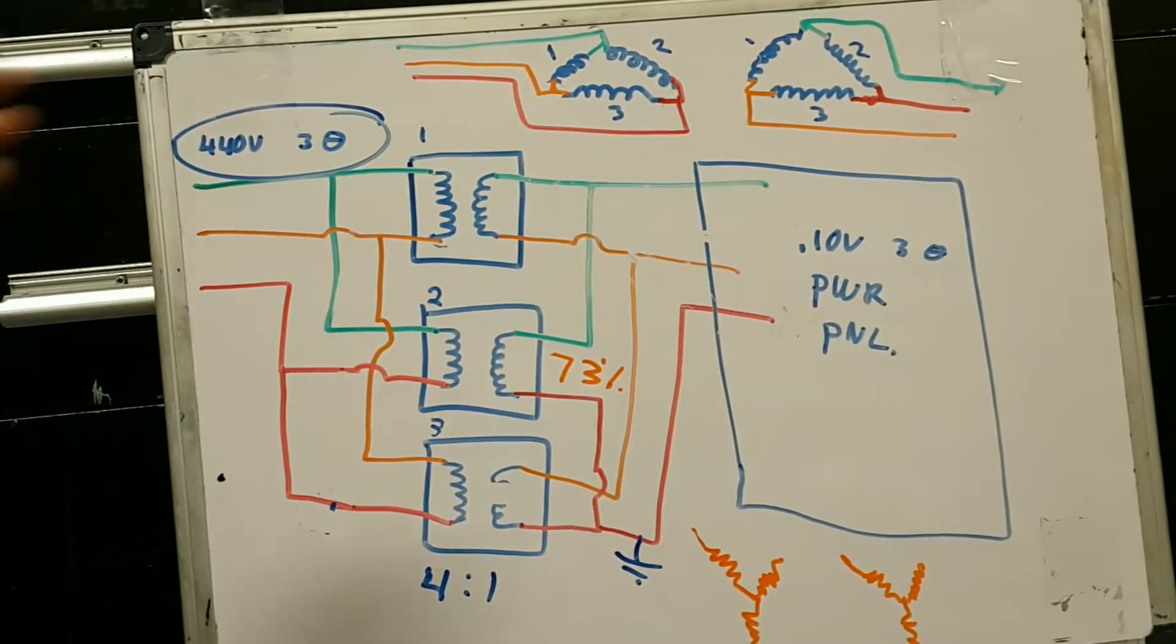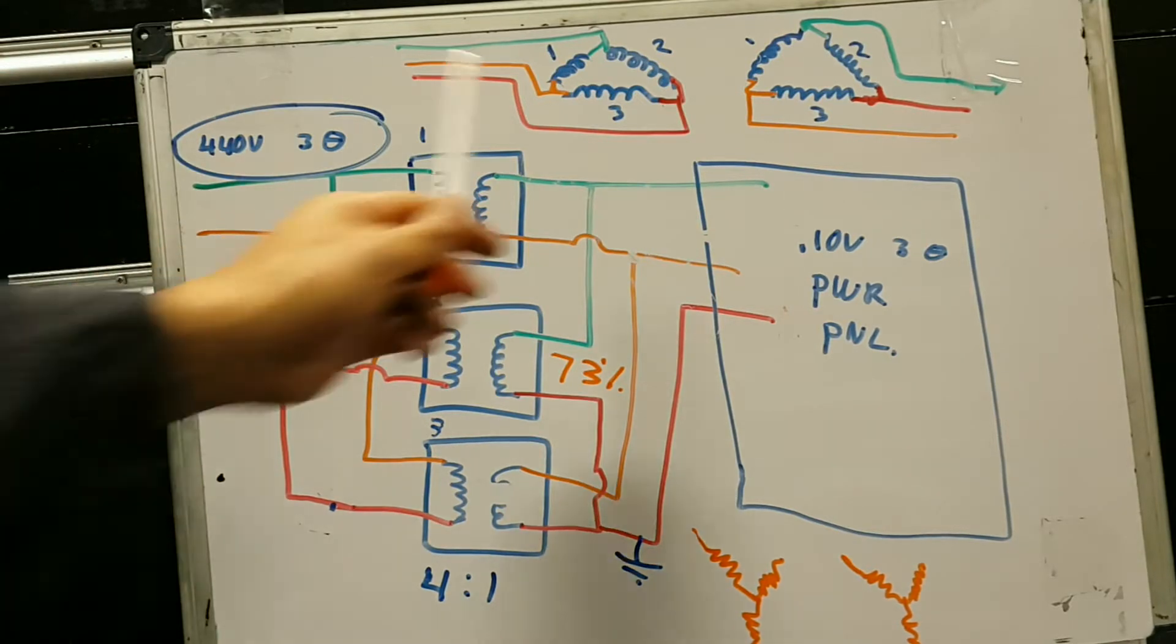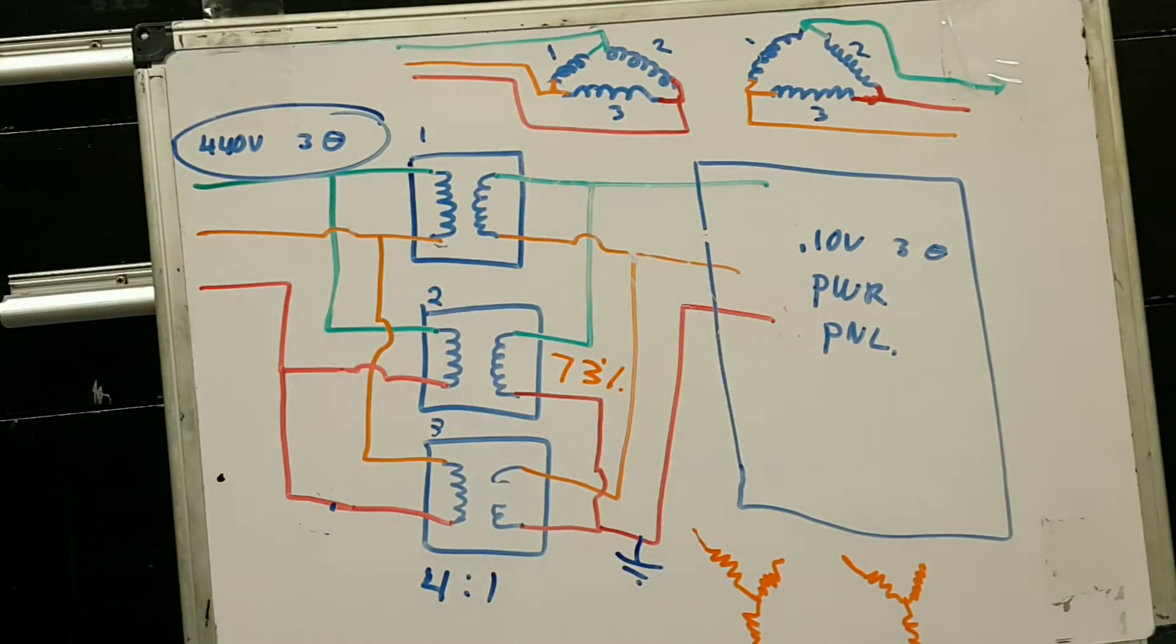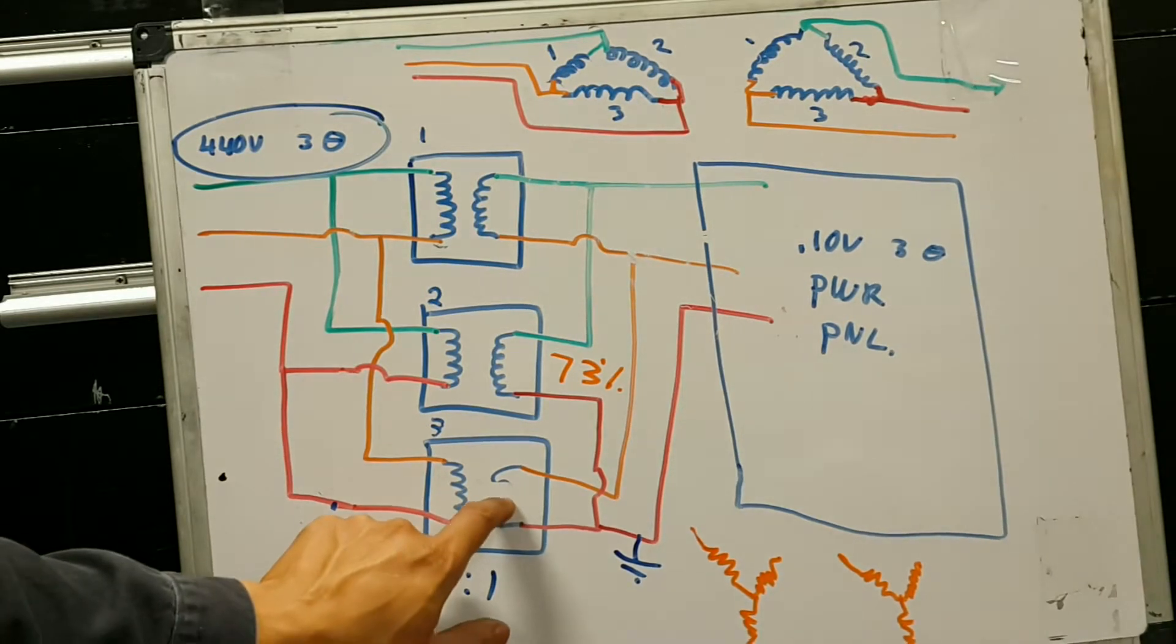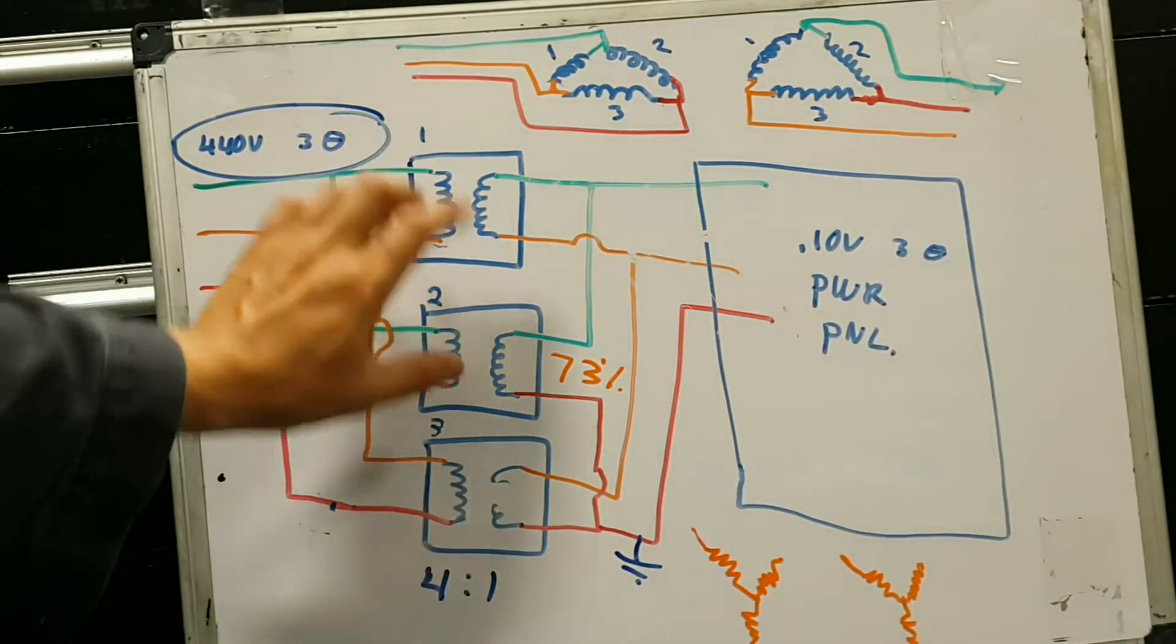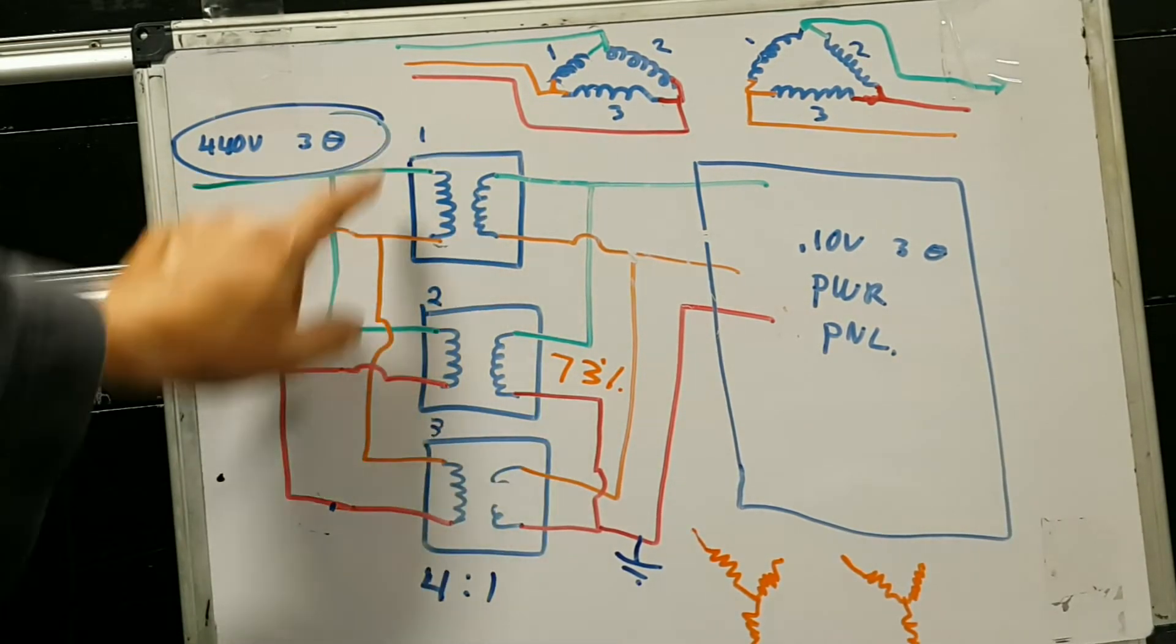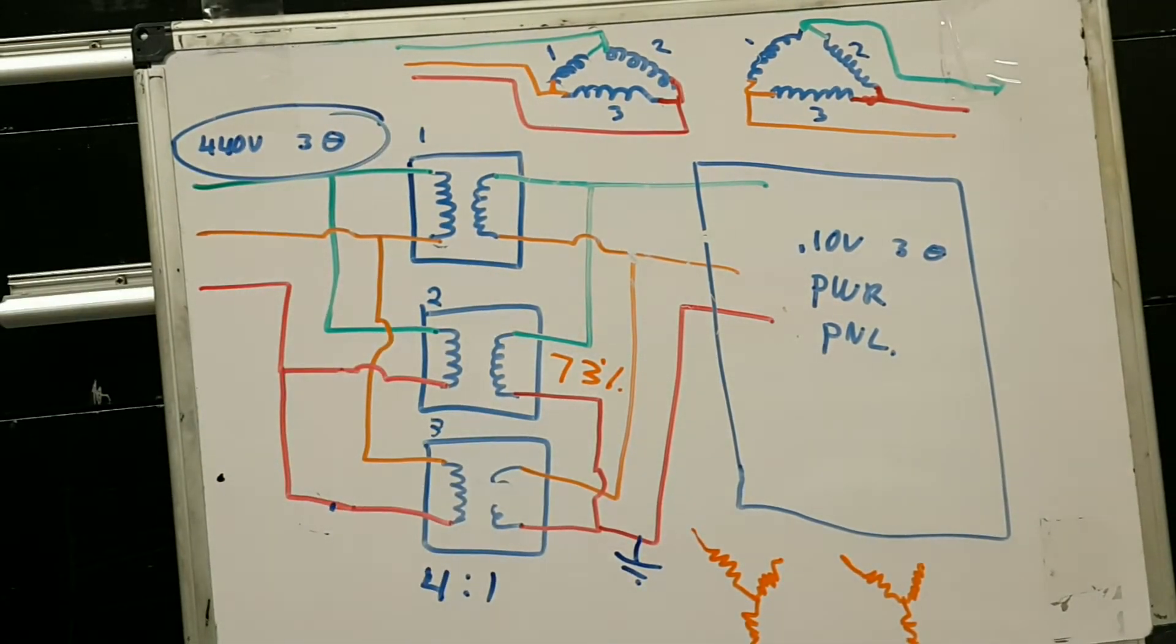Transformer banks of three always are connected in delta-delta because if in case one transformer burns up, the other two are able to carry 73% of the load or the full load of all three transformers.